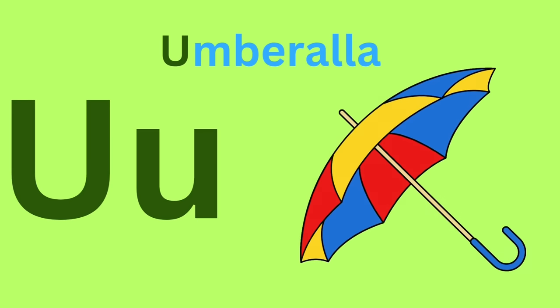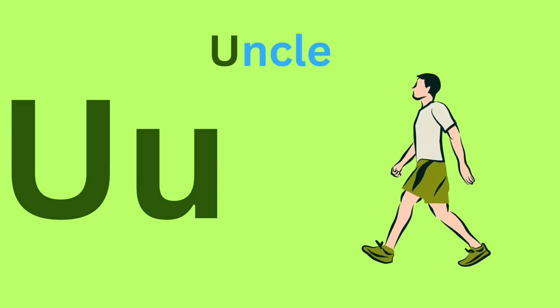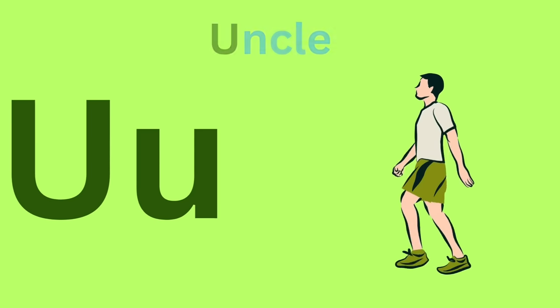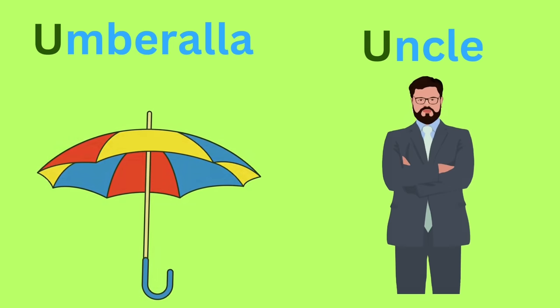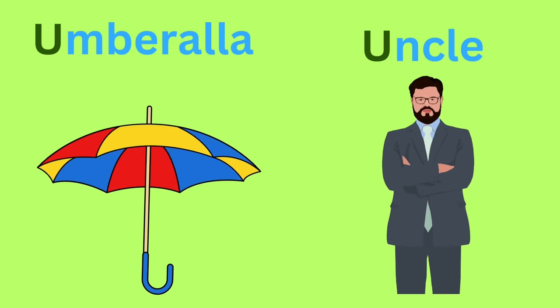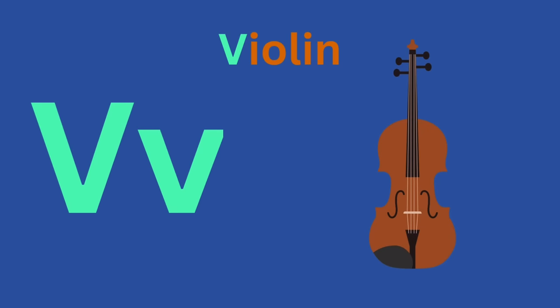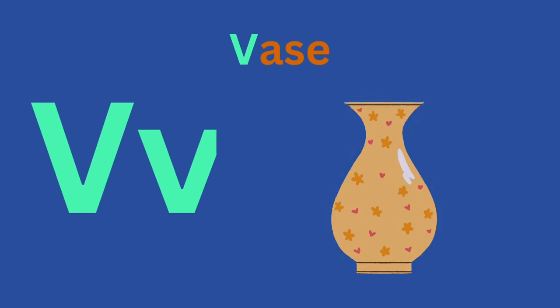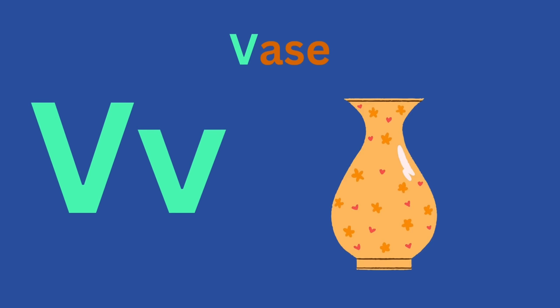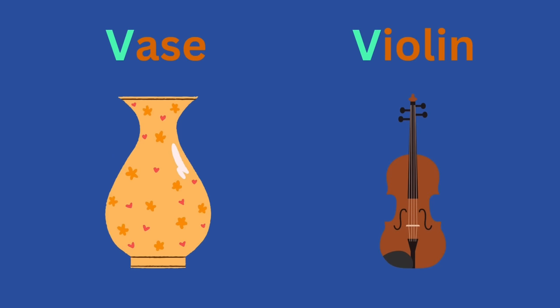U for umbrella. U for umbrella and U for uncle. V for violin. V for vase. V for vase and V for violin.